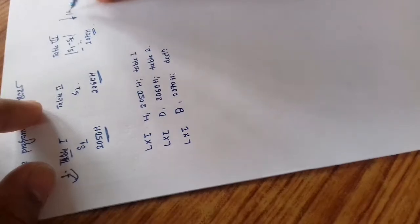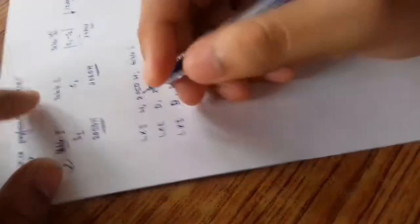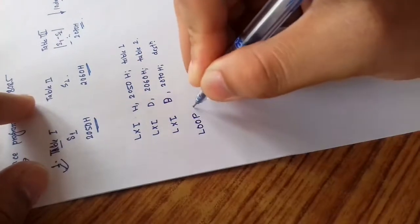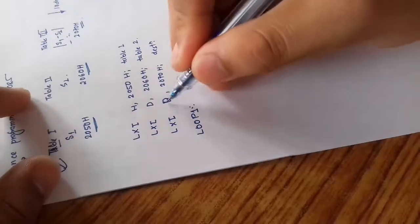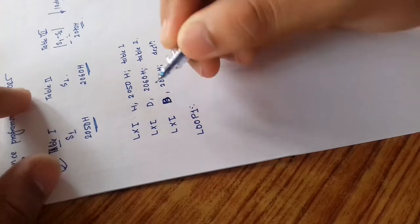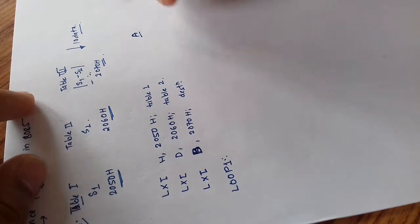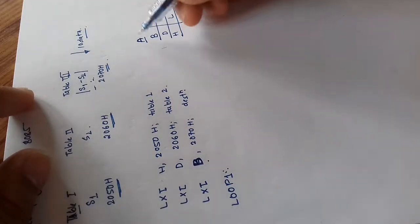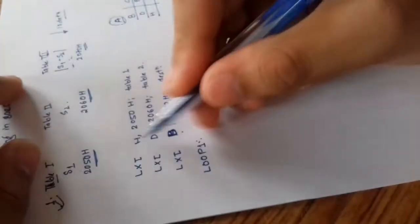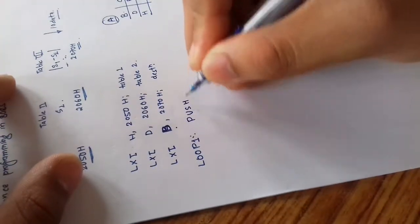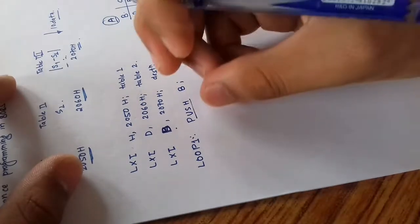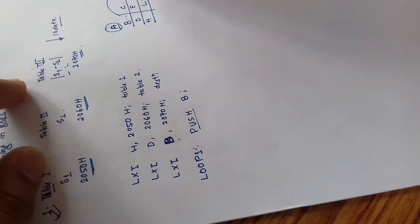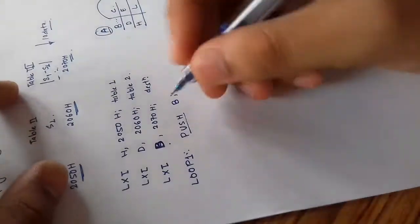We assume we have 10 data items. We have already used all the registers available — accumulator, HL, DE, and BC. Since the accumulator is needed for logical instructions and all registers are in use, we need to push the content of register pair BC onto the stack. The push command pushes data to the stack, and we can pop it out whenever necessary.